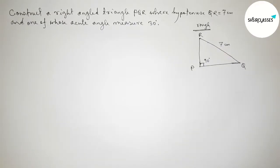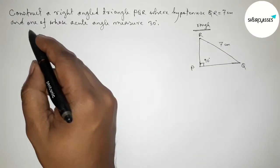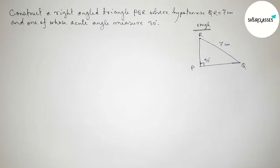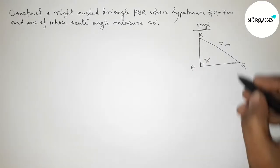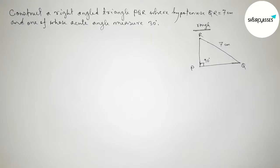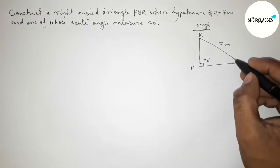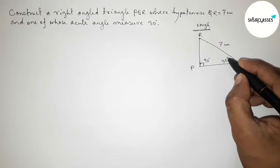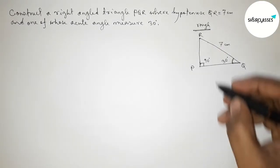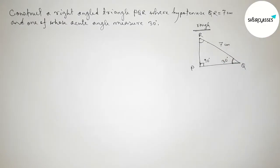Also, one of the acute angles measures 30 degrees. We can take angle Q equals 30 degrees or angle R equals 30 degrees — as your choice. Here I am taking angle Q equals 30 degrees. Next, we have to find the value of angle R.